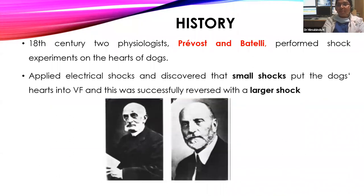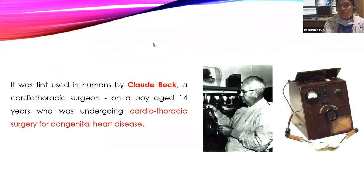Coming to history: the first shock experiments were performed on the hearts of dogs. Small electrical shocks applied to dogs put the dog's heart into ventricular fibrillation, and that VF was successfully reversed with a larger shock — that was the initial footstep of defibrillation and cardioversion.